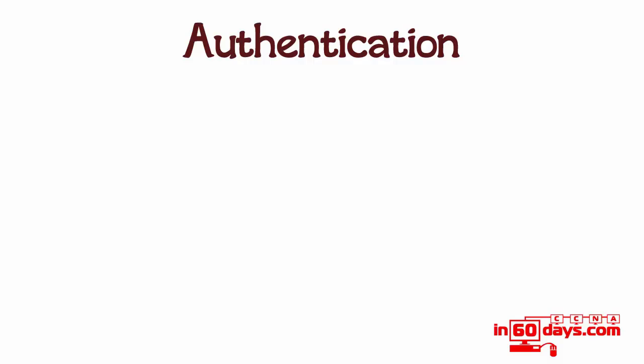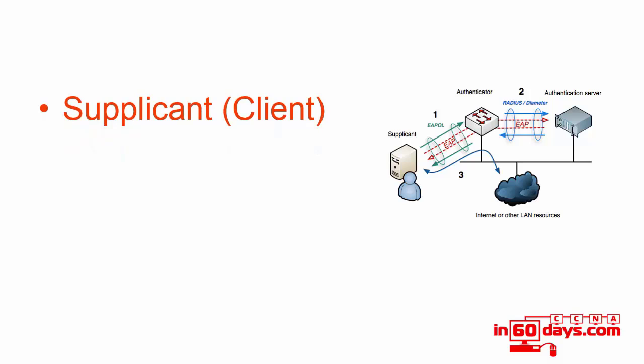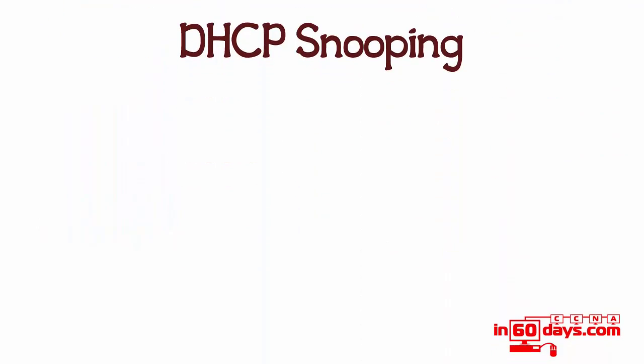For authentication, EAP — Extensible Authentication Protocol — messages are relayed from the switch, which is known as the authenticator, to the authentication server, which is usually running RADIUS protocol. RADIUS — I'll check the syllabus; I know Triple-A is covered. The supplicant is a client device or any device trying to authenticate onto the network. The authenticator is the switch configured for 802.1x, sending encrypted information to be authenticated by the authentication server. That's really all you need to know — Cisco Press doesn't go into a great amount of detail on this.